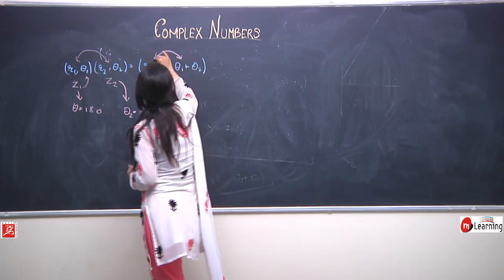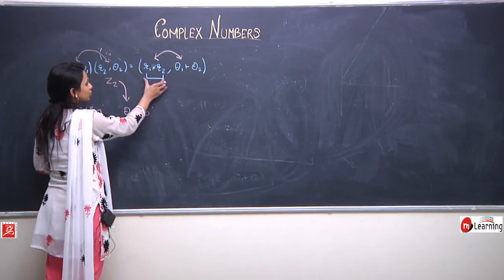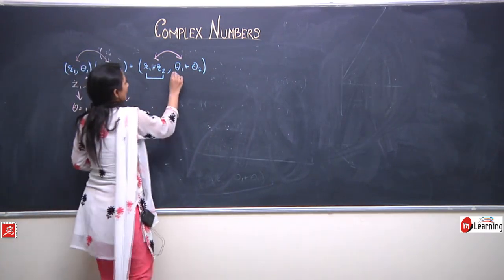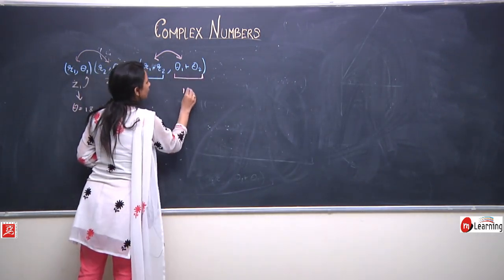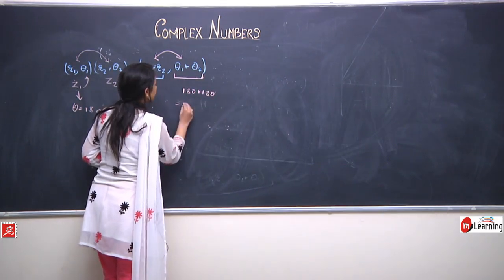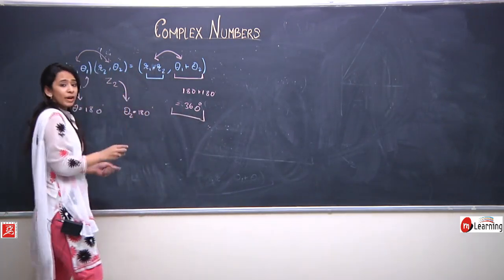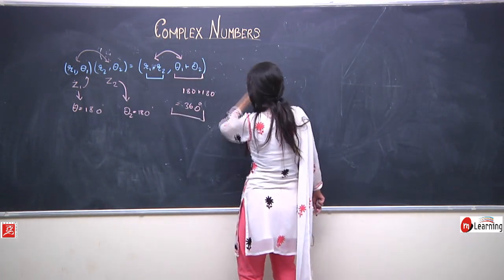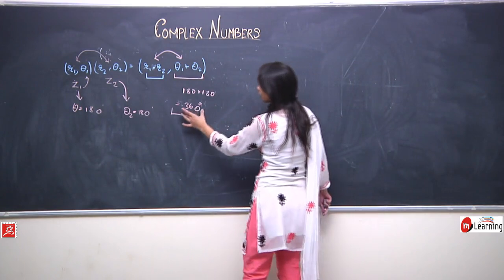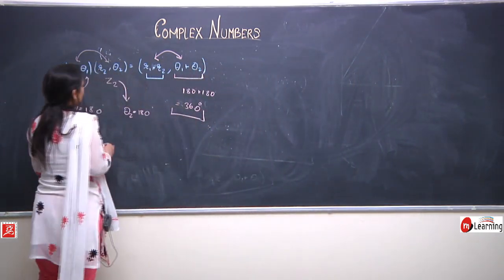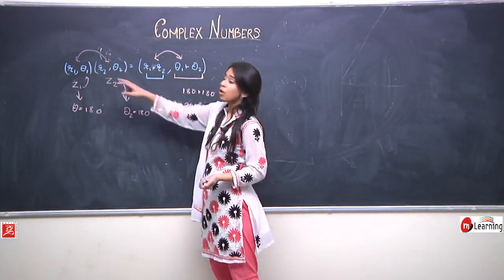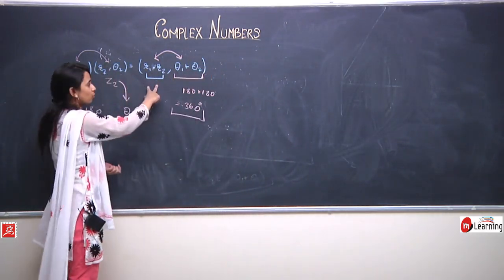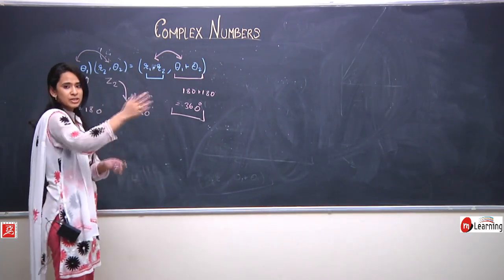From this, the multiplication of Z1 and Z2 gives a complex number with modulus r1 times r2 and argument theta1 plus theta2, which is 180 degrees plus 180 degrees equals 360 degrees. So when multiplying two complex numbers both with argument 180 degrees, the result lands on the positive direction of the x-axis because the argument turns out to be 360 degrees, which is the same as 0 degrees.